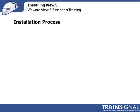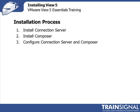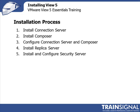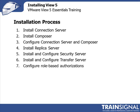Before the demo, here's a quick walkthrough of the installation process. First, install your first connection server. Then go to the vCenter server and install View Composer. Come back to the connection server to configure both it and View Composer. Then install additional replica servers as needed, configure security servers in your DMZ, install and configure the transfer server for local mode operations, and finally configure any role-based authorizations for administrative access.